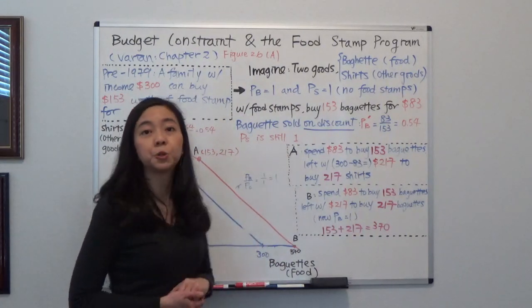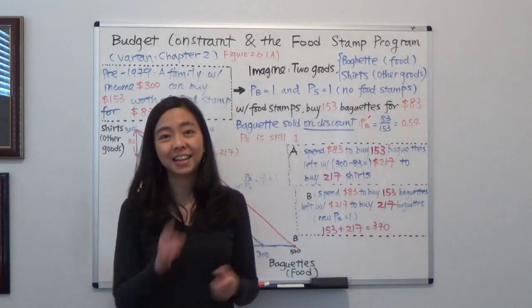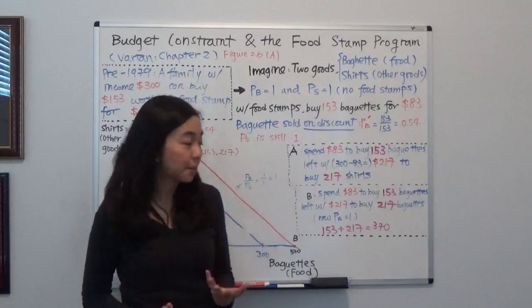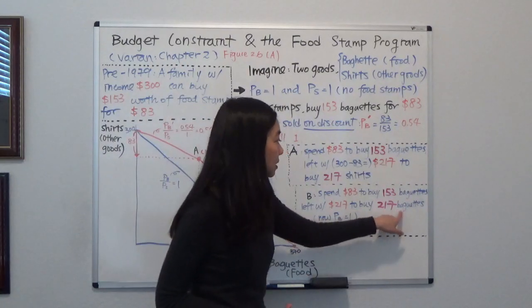Well, because after this point, your baguettes are not on discount anymore. It's still a dollar. So with $217, you can buy 217 baguettes.